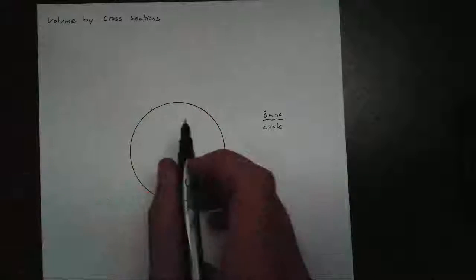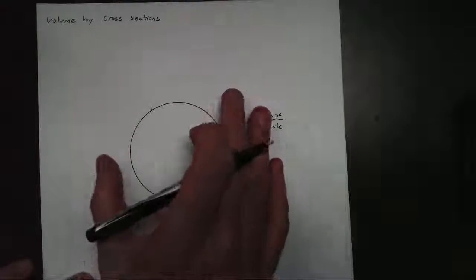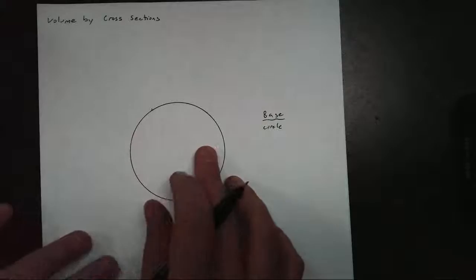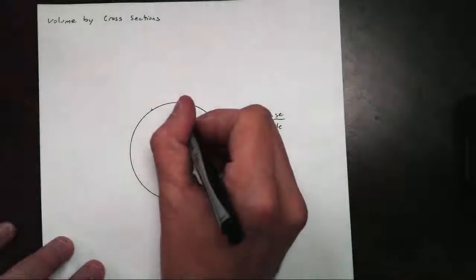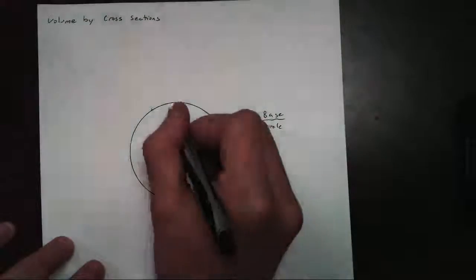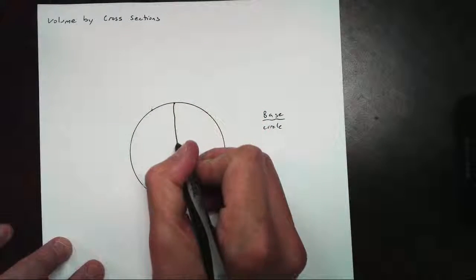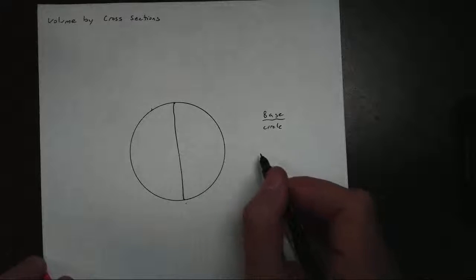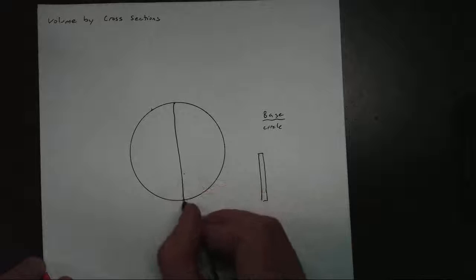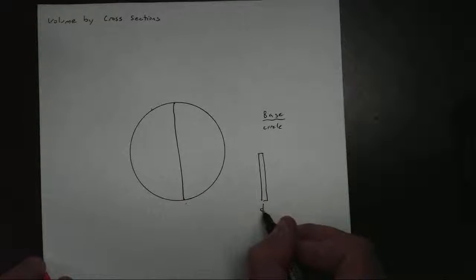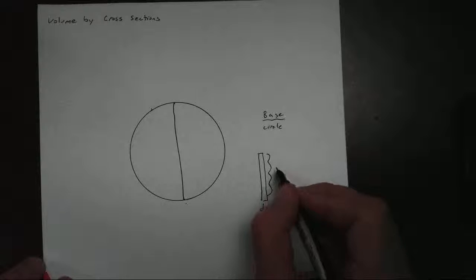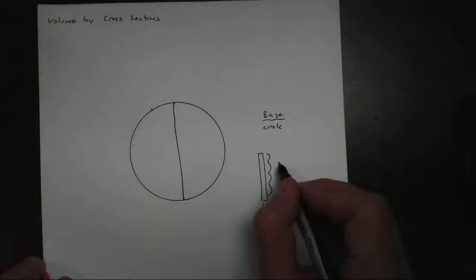Basically, what a cross-section is, it's a piece of our function, a piece of the base down here. So what we're going to do, how we get this - very simple, just like we did with area - we're going to drop a rectangle. That rectangle represents my cross-section, like so. It's going to have a thickness dx, and to get the height of that cross-section, it's going to be the top minus the bottom.